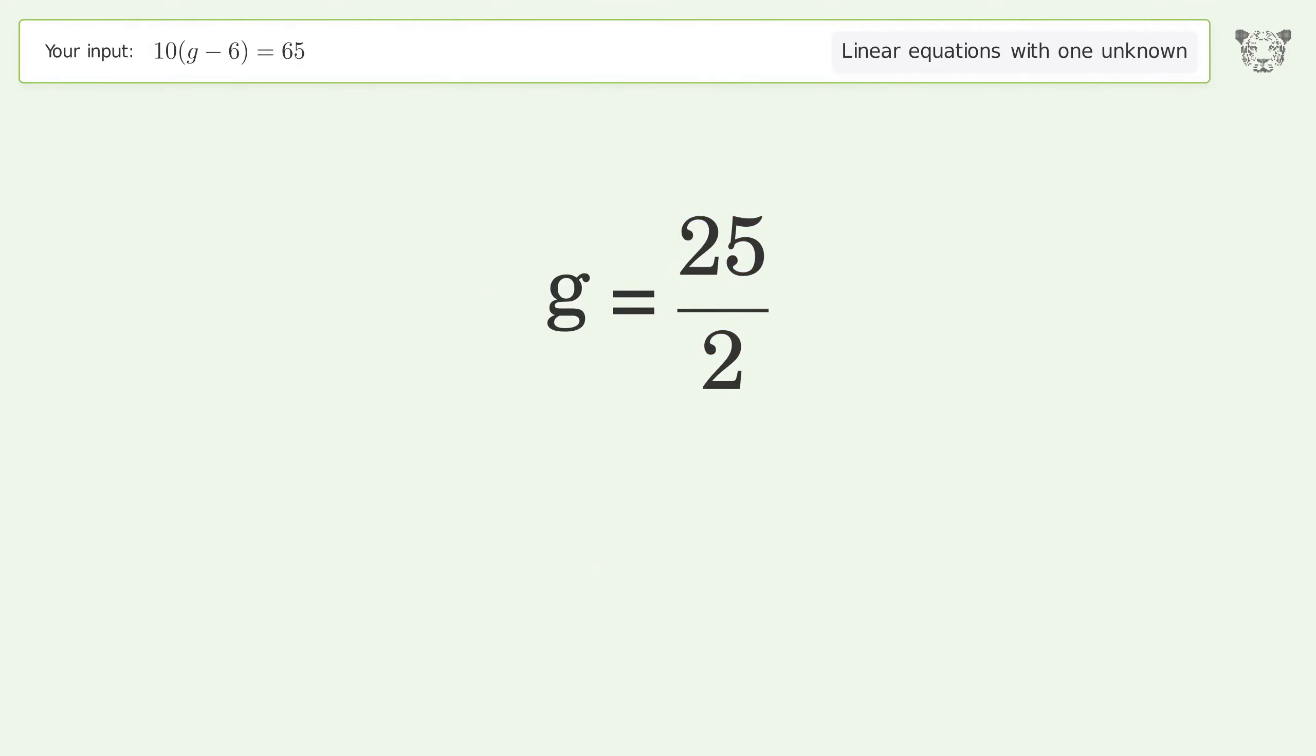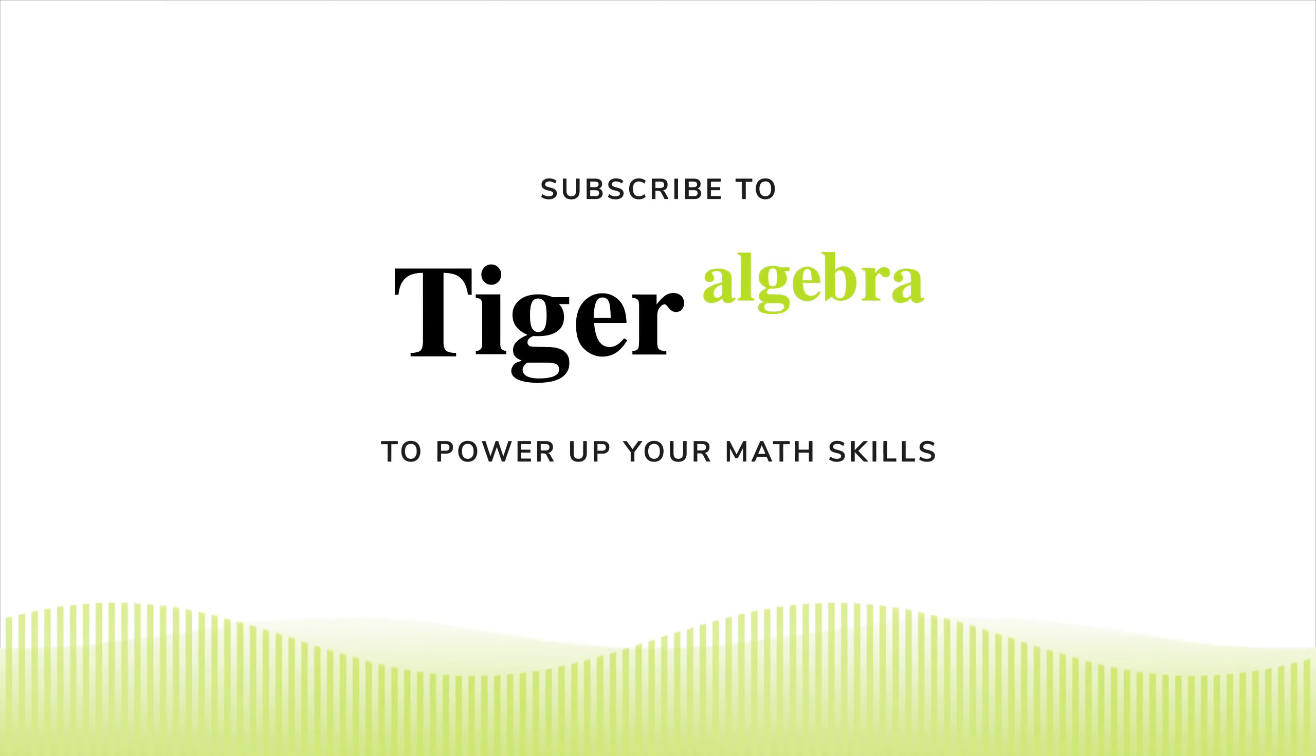And so the final result is g equals 25 over 2.